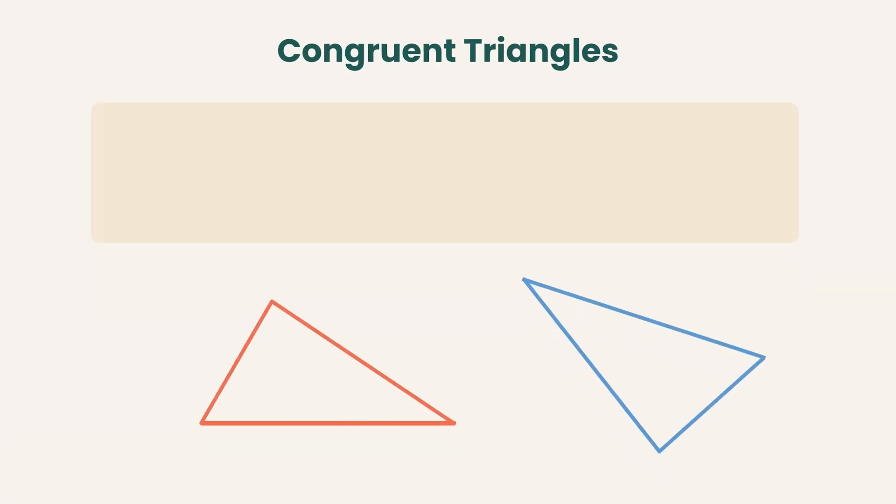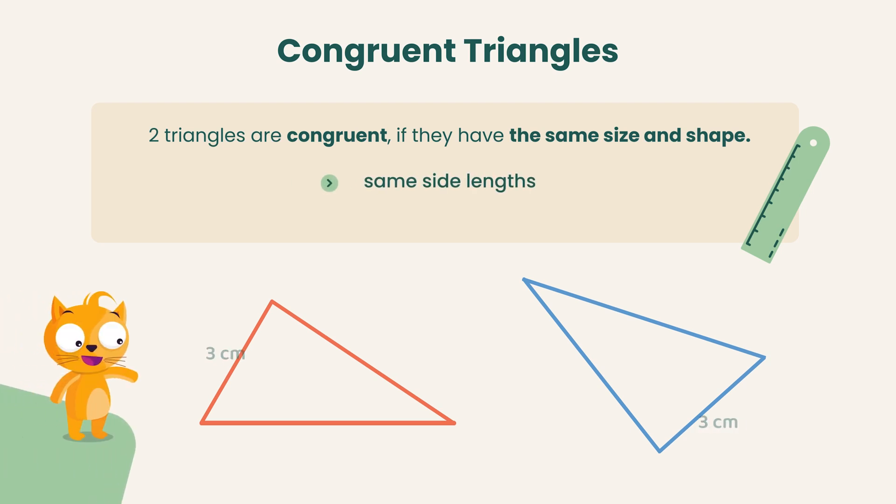In geometry, two triangles are congruent when they have the same size and shape. This means their corresponding sides are of equal length, and their corresponding angles have the same measure.